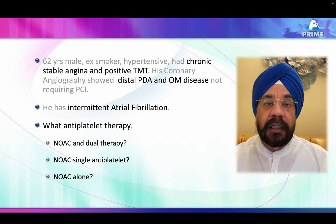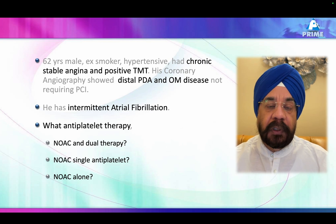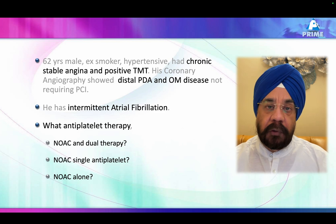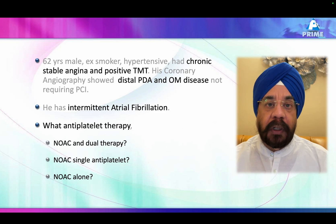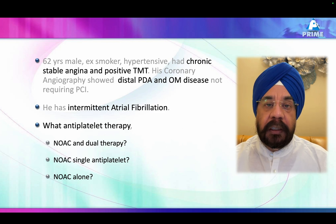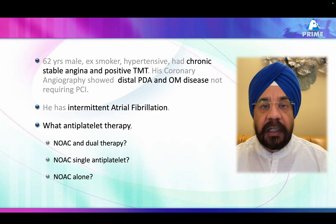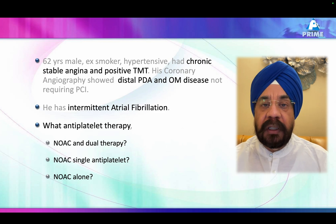He incidentally has long-standing atrial fibrillation due to hypertension. The question is: now that he requires anticoagulation for atrial fibrillation and also needs antiplatelet for coronary artery disease, what should we do? There are three choices: Should he be given NOAC and dual antiplatelet therapy? Should he be given NOAC and single antiplatelet therapy (aspirin or clopidogrel)? Or should he be given only NOAC?